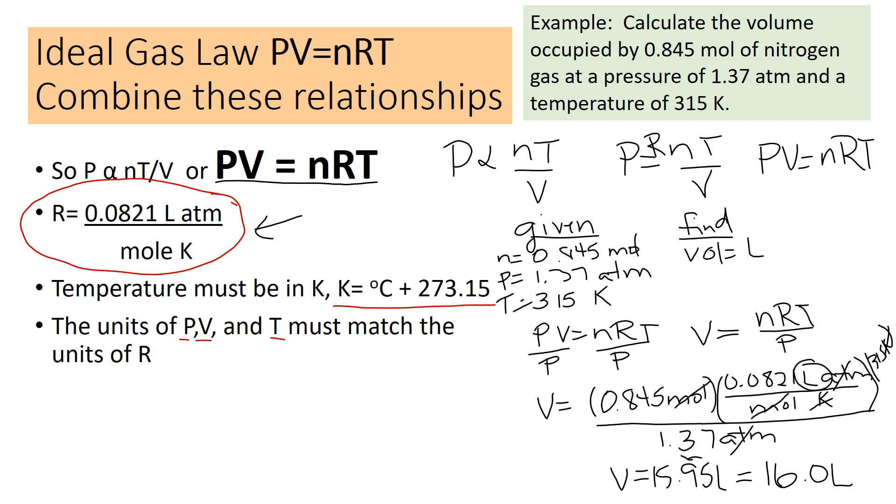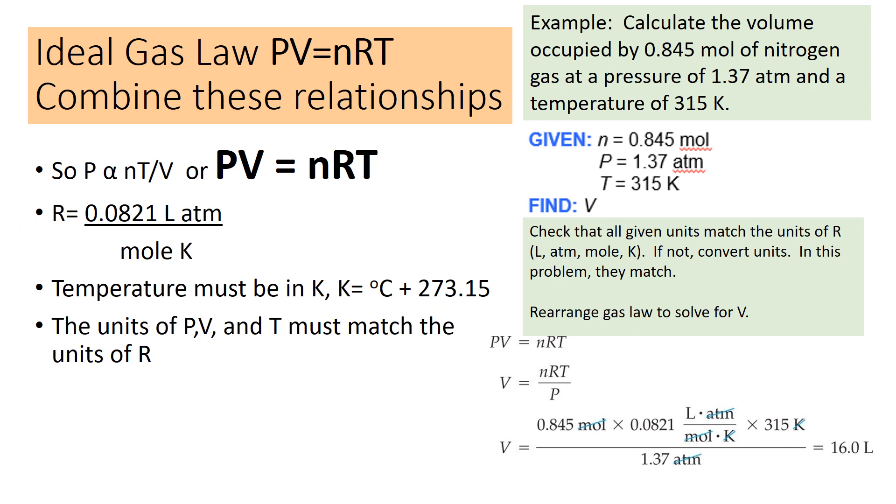So that's how you do the ideal gas law. I did it by solving for V first. You don't have to. You can plug your numbers in to PV equals nRT if you want to. I kept the units. You don't have to. You can cancel the units once you're sure they match R. Here it is a little more clean. My work was pretty messy, so this will probably be better to see.